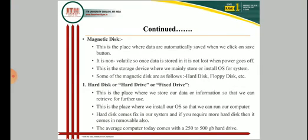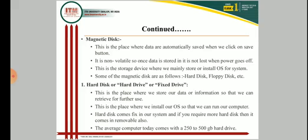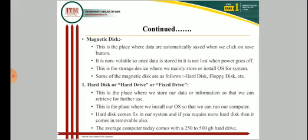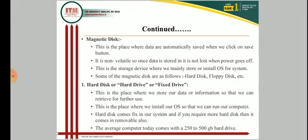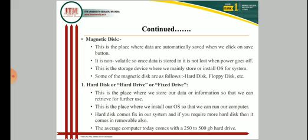Another storage device is the magnetic disk, where data is saved when we click the save button. It is non-volatile in nature and keeps data even when the power is switched off. In this storage device, we store or install software for the system. Some magnetic disks include hard disks and floppy disks. A hard disk is also called a hard drive or fixed drive — it is where we store data or information which can be retrieved for further use, and where we install our operating system or software to run the computer.